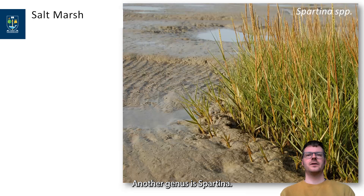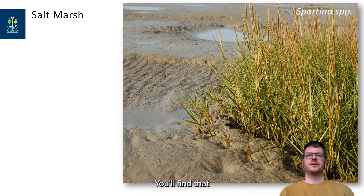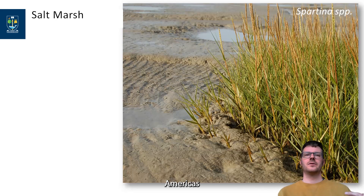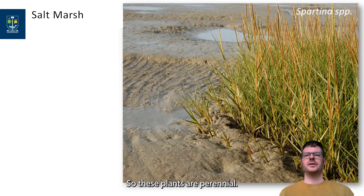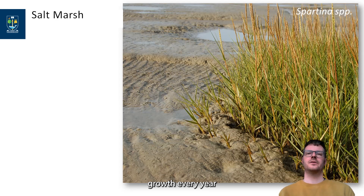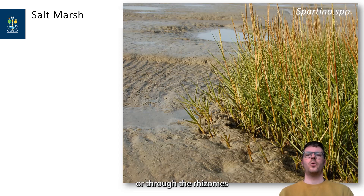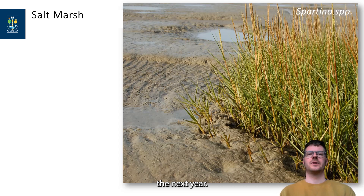Another genus is Spartina. You will find this genus across the globe — in New Zealand, China, Europe, and the Americas — with different species. This is a very efficient colonizer of intertidal mudflats. These plants are perennial, so they will regrow from underground growth every year, and they will colonize the mudflats either from seed or through the rhizomes, or underground growth, the next year.